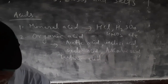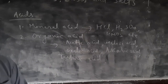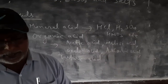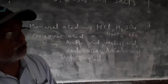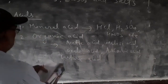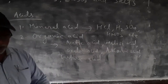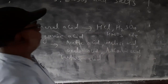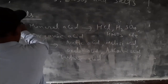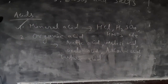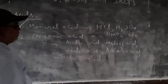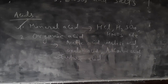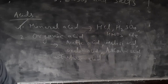Now about the uses of acids. Hydrochloric acid is used to clean wash basins and other sanitary wares. It is also used in bathroom cleaners. Sulfuric acid is used in auto batteries and in industry. Nitric acid is used in gold purification. Tartaric acid is used to make baking powder, which is a mixture of baking soda and tartaric acid.